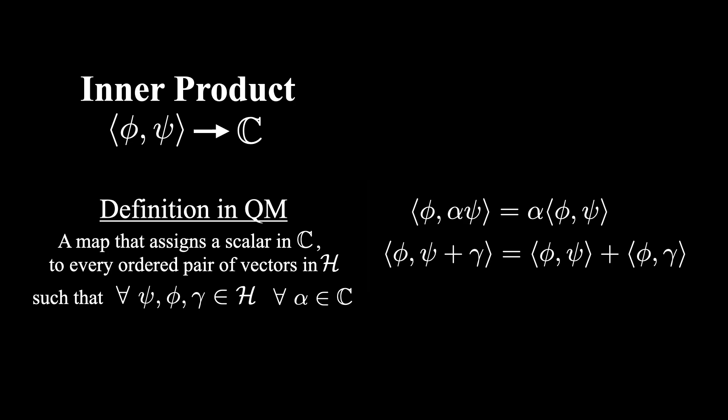Okay, so the next rule that the inner product must satisfy is that if you swap the vector in the first slot with the vector in the second slot, the resulting inner product is not equal, but rather they are the complex conjugates of each other. This is sometimes called complex conjugate symmetry.